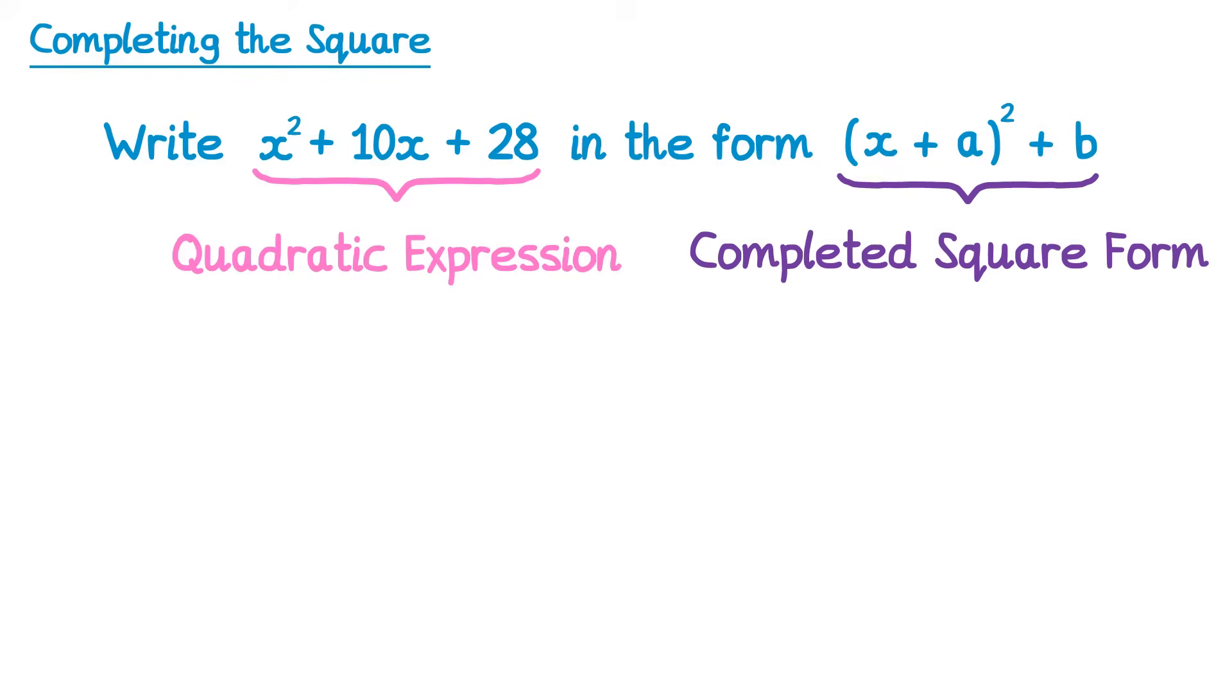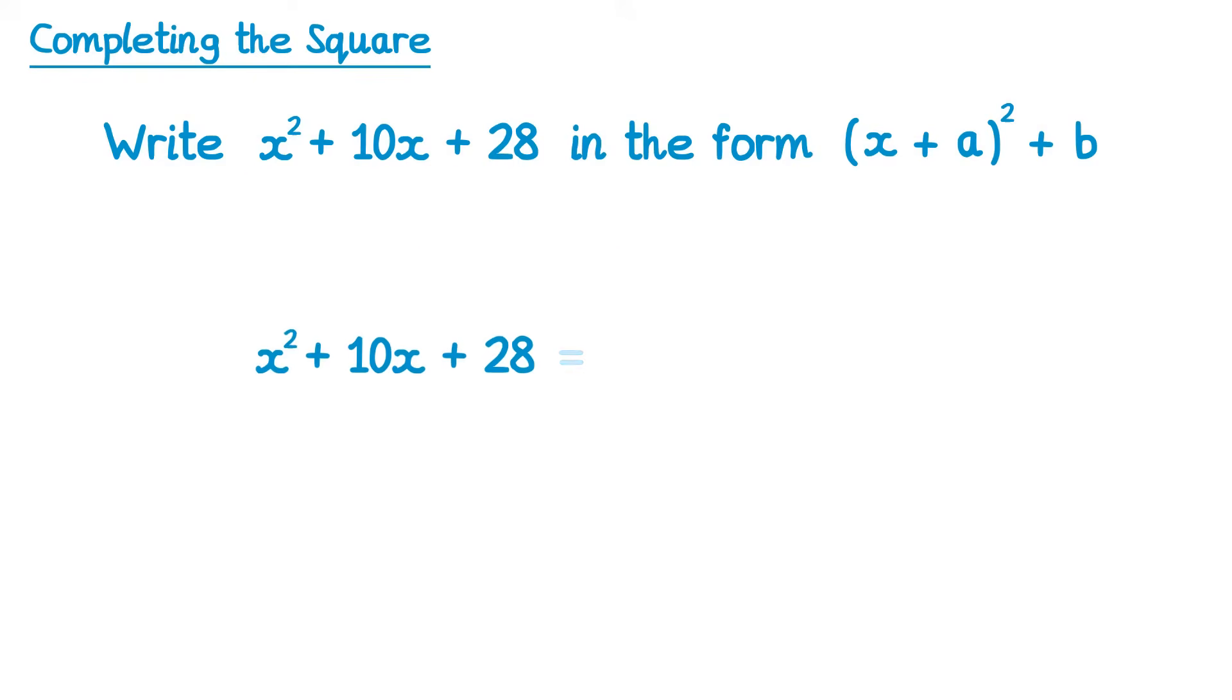So what we're required to do in this question is take the quadratic and rewrite it so it looks a bit different, in this form here, where a and b are just numbers. It turns out for this one a would be 5 and b would be 3. But how would we get there?